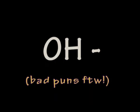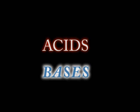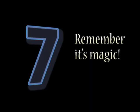Indicators change colors. Litmus is most common — red for acidic, blue for base, and neutral is a 7.